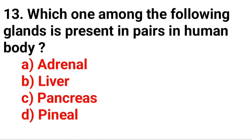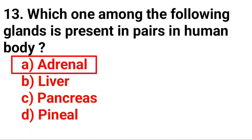Q13. Which one among the following glands is present in pairs in the human body? Option A: Adrenal.